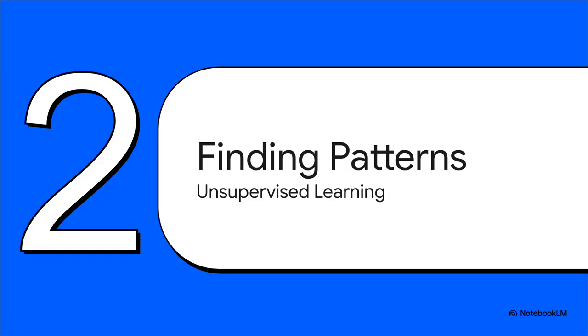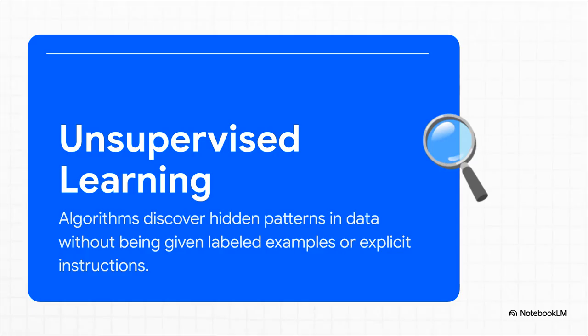Okay, that's all well and good. But what if you don't have an answer key? What if you're not even totally sure what question you're trying to ask in the first place? Well, welcome to the world of unsupervised learning. In this scenario, we give the algorithm a huge pile of raw, unlabeled data. And we basically just tell it, go find interesting stuff. Its whole job is to explore the data and see if it can find any hidden patterns, any structures, any relationships, all on its own.